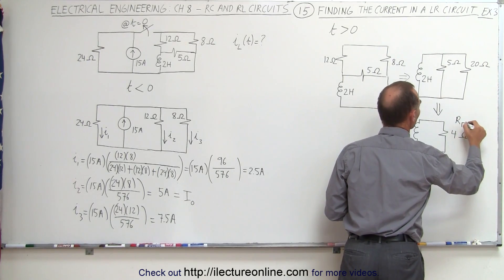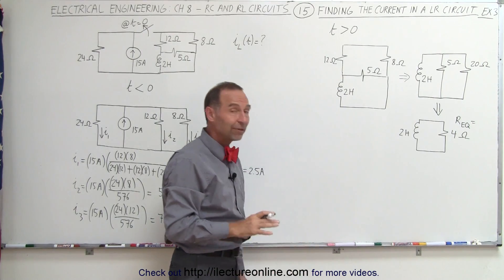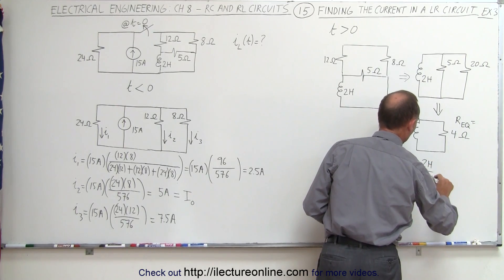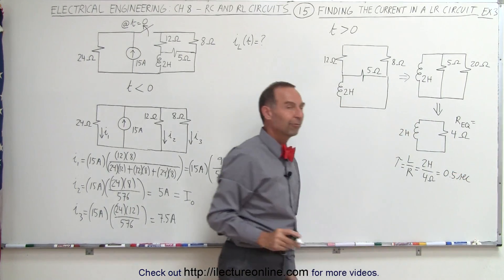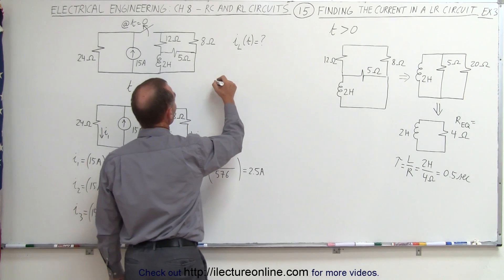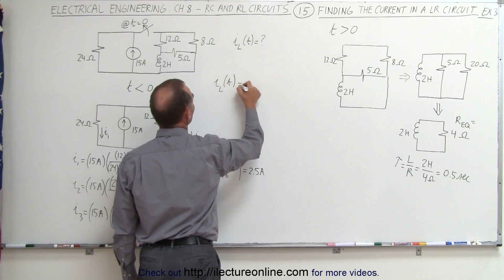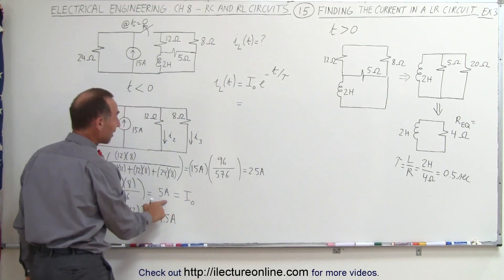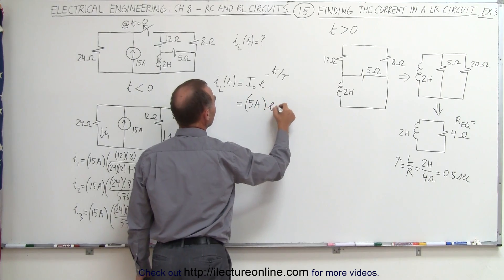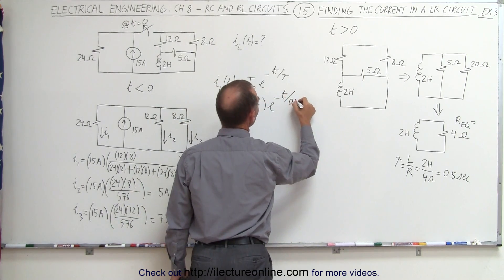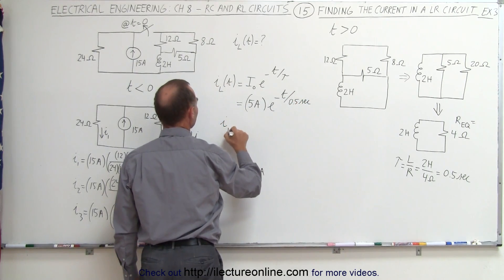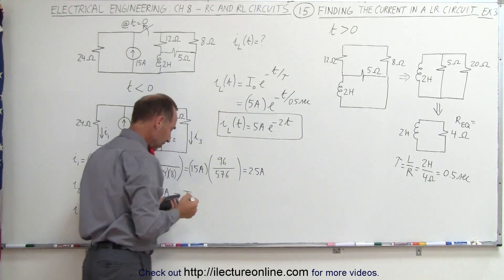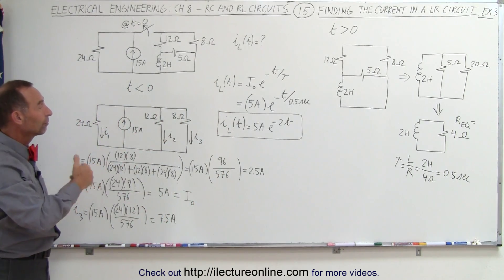Once we find the equivalent resistance, we can find the time constant. The time constant τ equals L over R, which is 2 Henrys divided by 4 ohms, equal to 0.5 seconds. From that, we find the current through the inductor: i(t) equals the initial current times e to the minus t over tau. The initial current is 5 amps, and tau is 0.5 seconds. Written in simplified form, that's i(t) equals 5 amps times e to the minus 2t. That is the current through the inductor after the switch opens for time greater than zero.